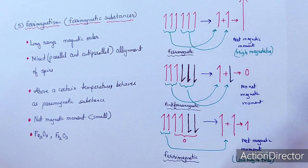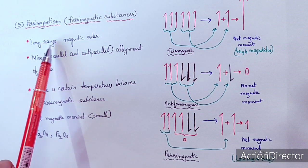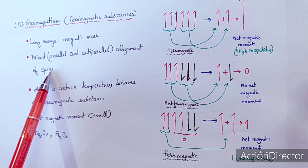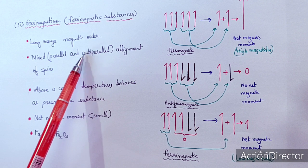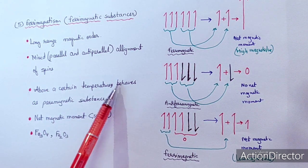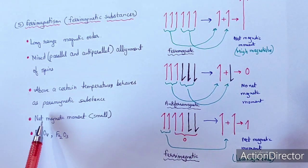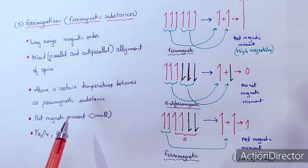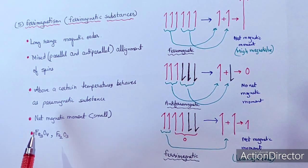The fifth type of magnetism is ferrimagnetism, and these substances are known as ferrimagnetic substances. Ferrimagnetism is also a long-range magnetic order. After applying a magnetic field, a mixed alignment of spins appears — some spins are parallel and some are anti-parallel. There is some net magnetic moment when the magnetic field is applied, but the magnitude is very small.